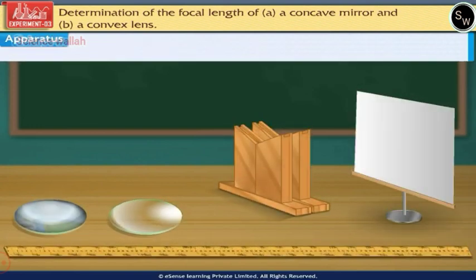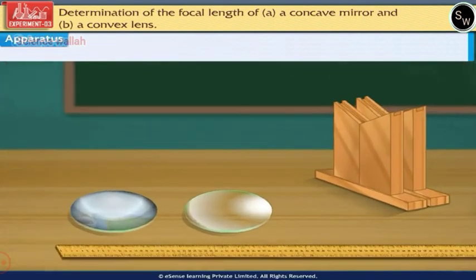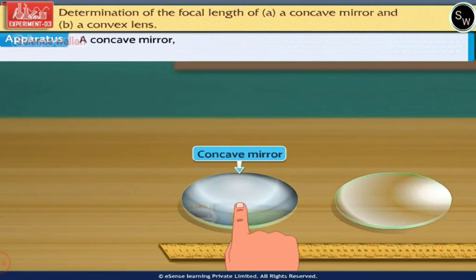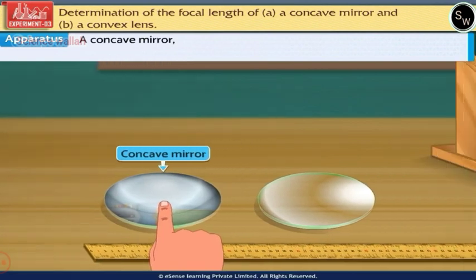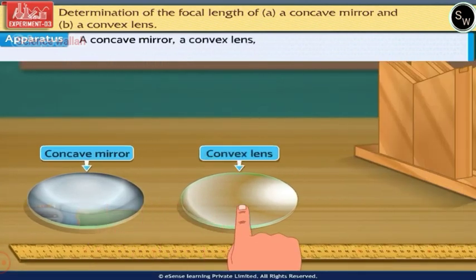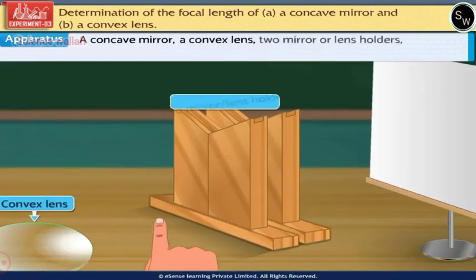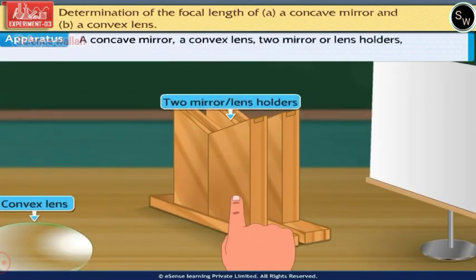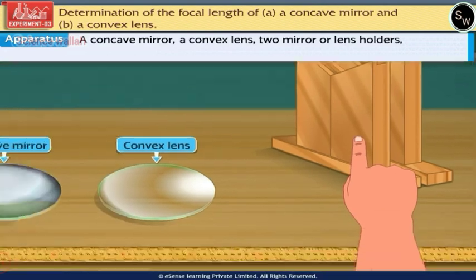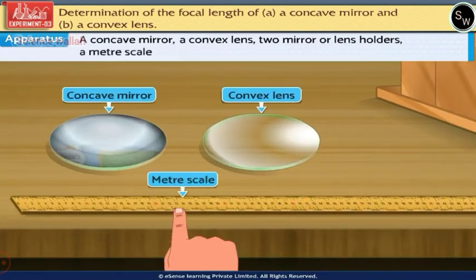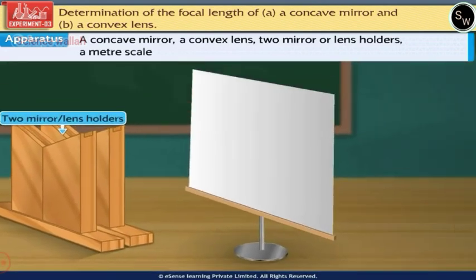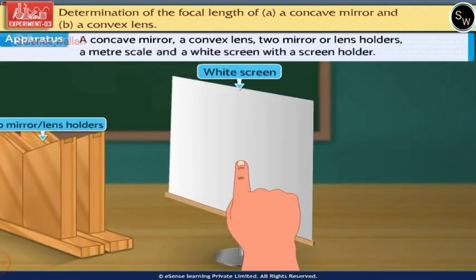The apparatus required to perform this experiment are a concave mirror, a convex lens, two mirror or lens holders, a meter scale, and a white screen with a screen holder.